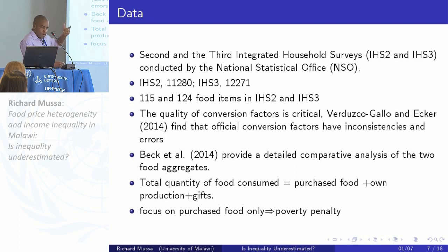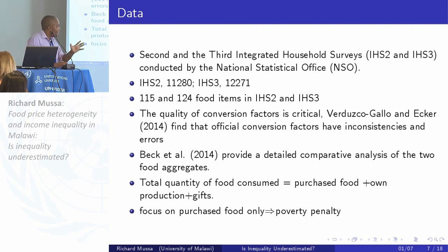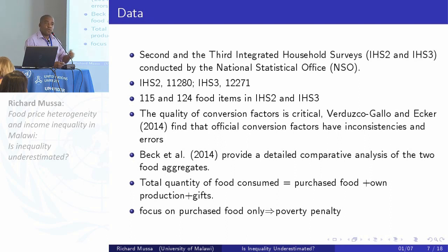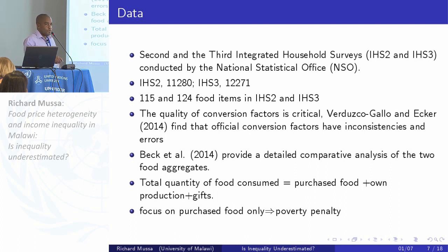More details about what happens to actual consumption when you use these new conversion factors are given in Beck 2014, a paper presented here last year. Total food consumption is composed of three items: purchased food, food from own production, and gifts. Since I'm talking about a poverty penalty in the food market, my main focus is on purchased food. The paper gives more details about the shares between rural and urban in terms of purchased food and the three components.